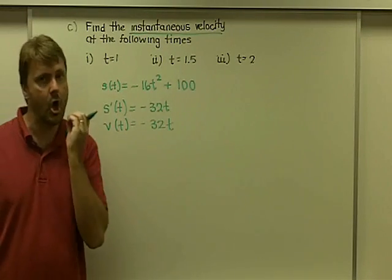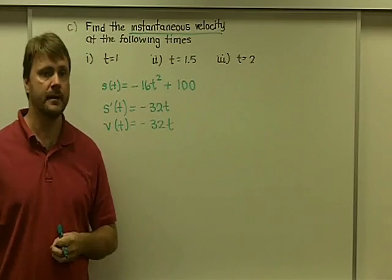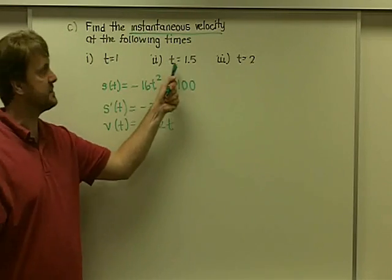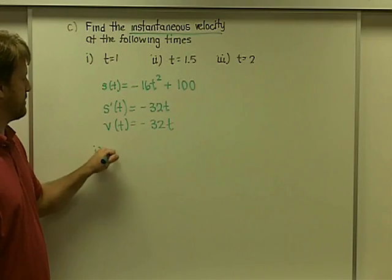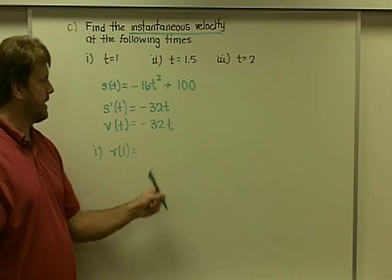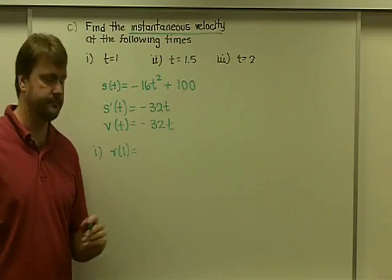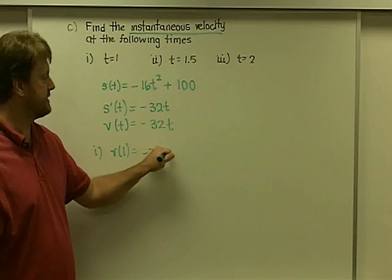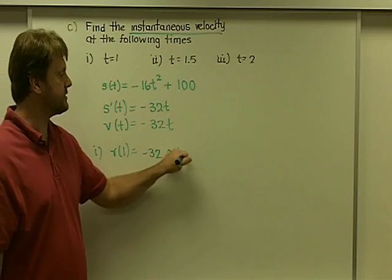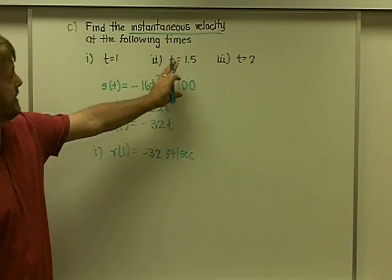which I want you to also be comfortable with the fact that it's equal to your velocity. S prime and V will always be the same thing. So, if we want to find out specific velocities, all we have to do, say for part 1, is plug in 1. Okay, what's negative 32 times 1? Negative 32. Just like all other velocities, this is, of course, measured in feet per second.